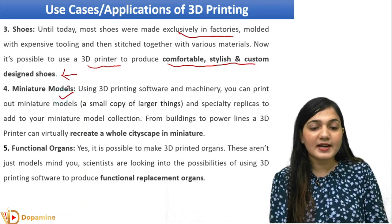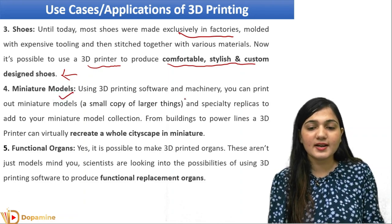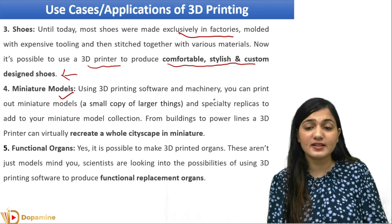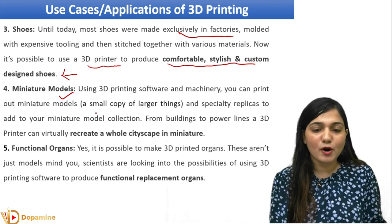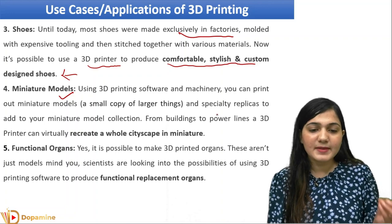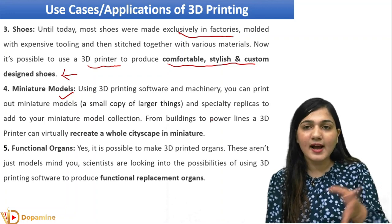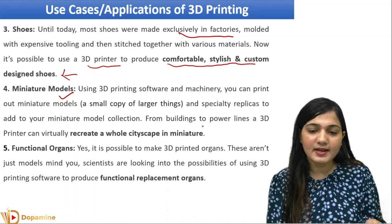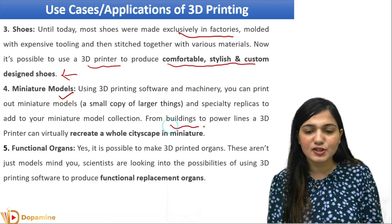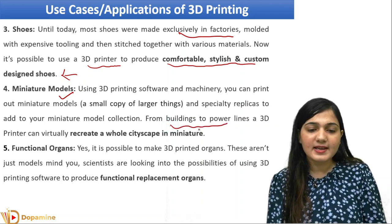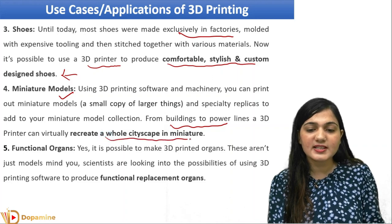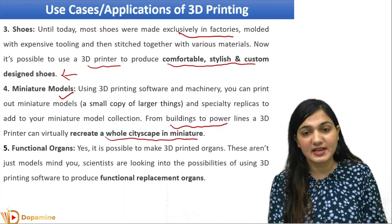We can get a miniature model from 3D printing. If you have big machinery in a factory, you can make a miniature model of the same machine to see if it is working or not — if it is working, then you can make the full-sized model. You can make miniatures for buildings and recreate a whole city space in miniature as well.